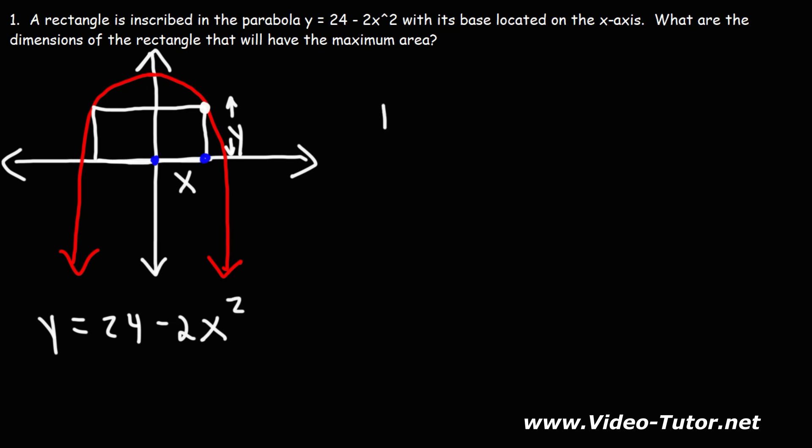I'm going to redraw the rectangle. Our goal is to determine the dimensions of the rectangle that will give us the maximum area. This is the length, and this is the width of the rectangle. When solving optimization problems, you need to use two functions: the constraint equation and the objective function. The objective function is the one that you're trying to maximize or minimize. In this case, that's the area.